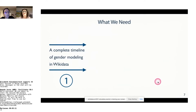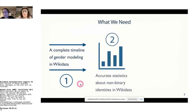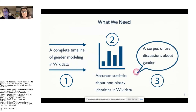What do we need to answer these questions? First, a complete timeline of gender modeling in Wikidata since the beginning — nine years of gender modeling. Then we need accurate statistics about non-binary identities in Wikidata, which is quite easy to achieve by running SPARQL queries on the graph. And then we need a corpus of user discussions about gender to answer the third question about how gender has been discussed and how users have made decisions about gender modeling.